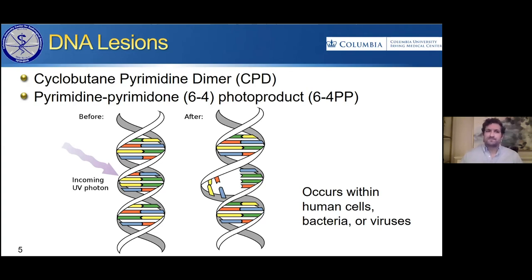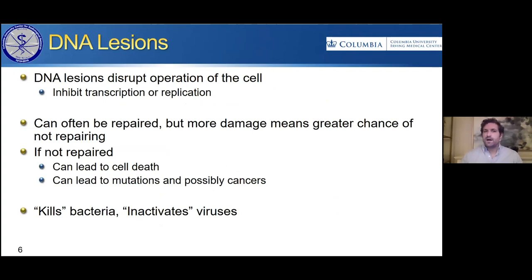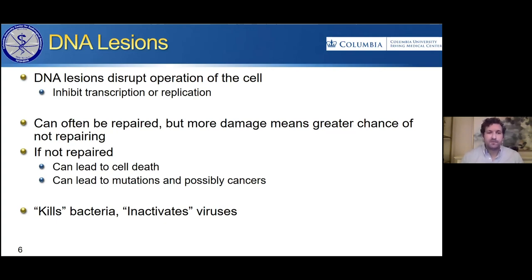How do these photons damage DNA or RNA? The primary path is through what's called a DNA lesion. The incoming photon will interact with the DNA double helix, break molecular bonds, and reshape the DNA, changing how it operates because it will be damaged and won't have its natural structure. DNA lesions can disrupt operation of the cell or virus, leading to inhibition of transcription or replication. Many photons can cause many DNA lesions. Usually these can be repaired, but the more damage that occurs, the smaller the chance they'll all be repaired. If a DNA lesion is not repaired, that can lead to cell death, a mutation, or possibly cancer.